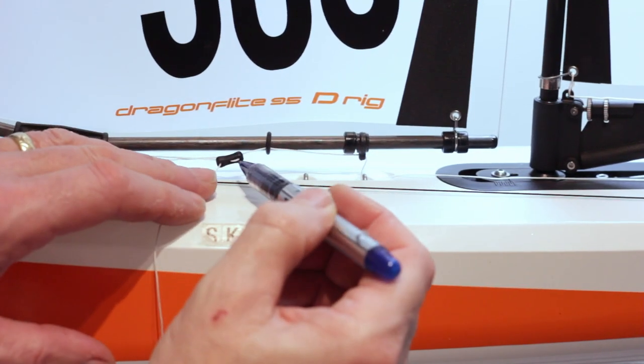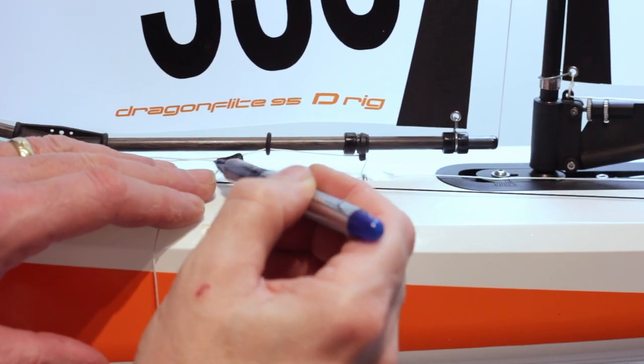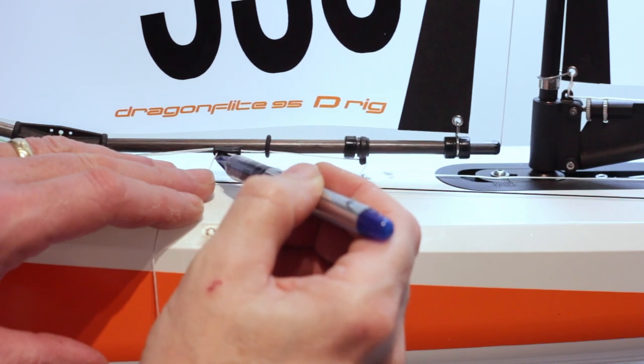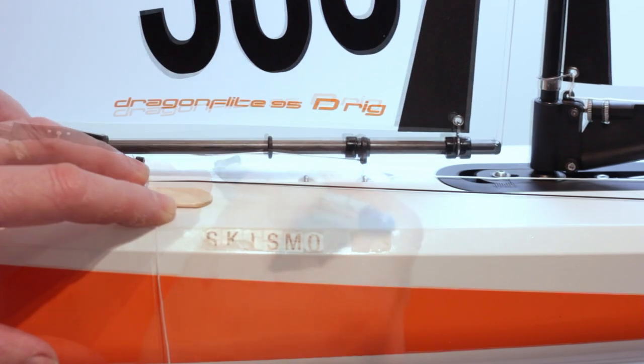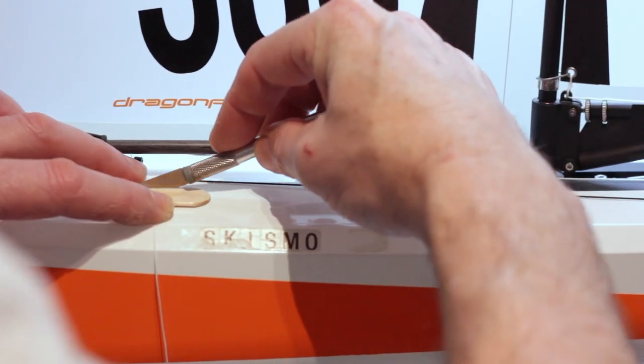Now mark where the dyneema exits the bousy and tie a stopper knot there. Cut any excess dyneema with a sharp blade and use super glue to stop the cuts from fraying.